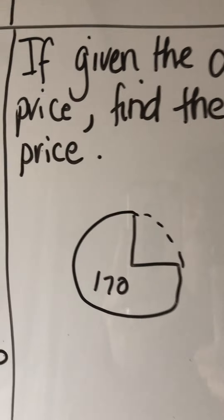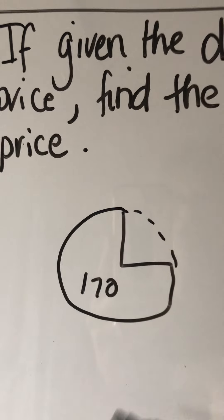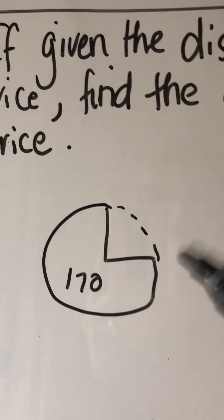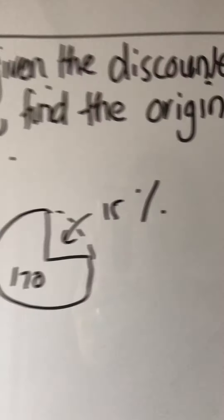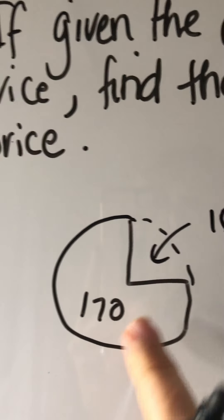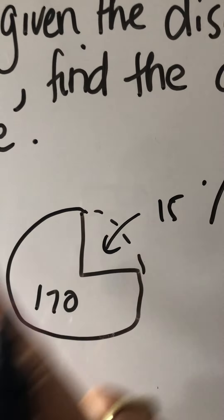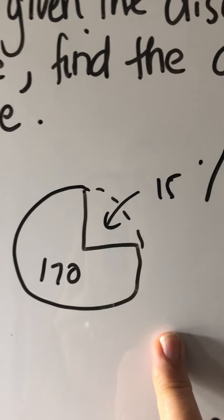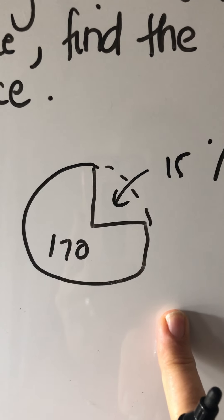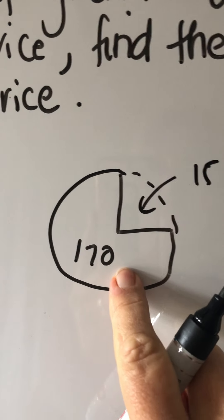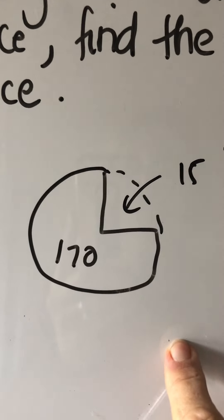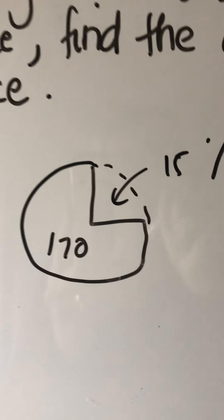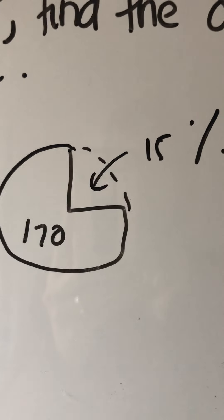But let's have a look at what a lot of children would do, or can I just say human beings. They said the price is 170 after a discount of 15%. What was the original price? What do a lot of us do? We say 15% of 170 and we add it on. But we're not going to get the right original price.